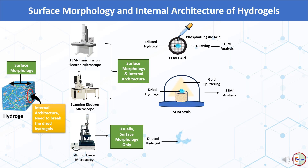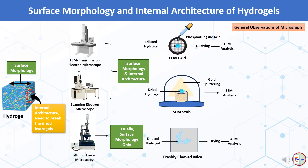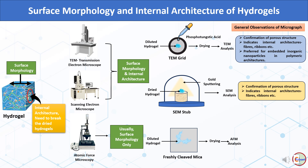For atomic force microscopy, diluted hydrogel is placed on freshly cleaved mica and dried before AFM analysis. TEM and SEM micrographs confirm porous structure of hydrogels and reveal internal architectures like fibers, ribbons, etc. TEM is preferred for embedded inorganic nanoparticles in polymeric architectures. AFM generally indicates surface morphology of hydrogels.